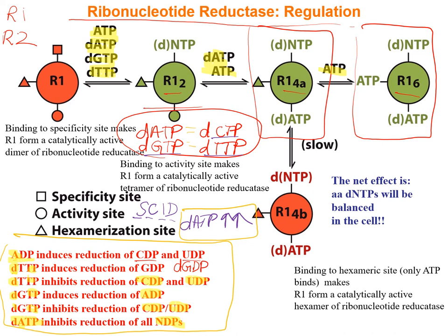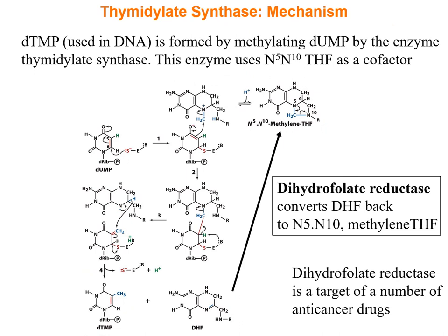This exquisite, high-resolution level of regulation is meant to ensure that all nucleotide triphosphates are present in equal amounts, which is required for DNA to be efficiently replicated without mistakes. By ensuring equal amounts through this mechanism, ribonucleotide reductase prevents DNA errors as well as diseases such as SCID — severe combined immunodeficiency syndrome.